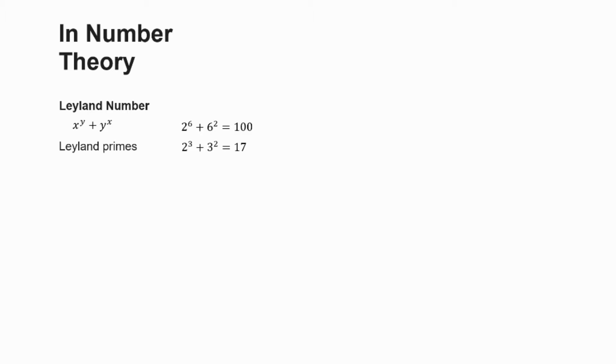100 is also something called a Harshad number, or sometimes called a Niven number. These are integers that are divisible by the sum of their digits. Let me give you an example: 18 has two digits, 1 and 8, and if we add those together, 1 plus 8 equals 9, and 9 is a factor of 18. That makes 18 a Harshad number.